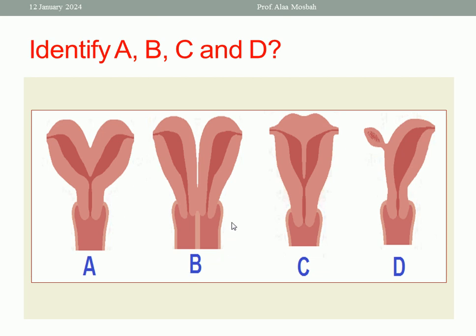What about B? B is uterine didelphys. Each Mullerian duct developed separately, so you will find two uteri, two cervices, two vaginas. This is called uterus didelphys, uterine didelphys. Another anomaly for development of Mullerian ducts.